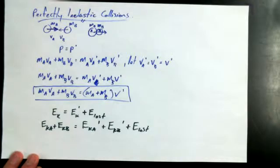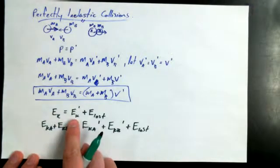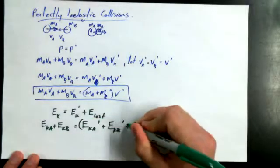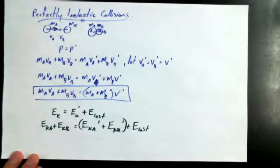EK equals EK primed plus E lost. Energy lost. And now, do you want to go through the process of seeing it with all the one-half mv squareds and all that in there? No. I want to just make this point. EKA primed and EKB primed represent two masses that are stuck together now. So instead of saying this, I could just say EK for the system primed.